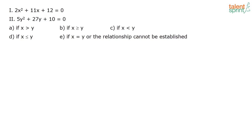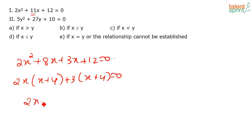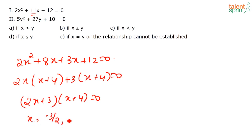Next question: 2x² + 11x + 12 = 0. The sum must be 11 and product of two numbers must be 24 (2 × 12). Those numbers are 8 and 3. Splitting: 2x² + 8x + 3x + 12 = 0. Taking 2x common from first two: 2x(x + 4) + 3(x + 4) = 0, giving (2x + 3)(x + 4) = 0, so x = −3/2 and x = −4.